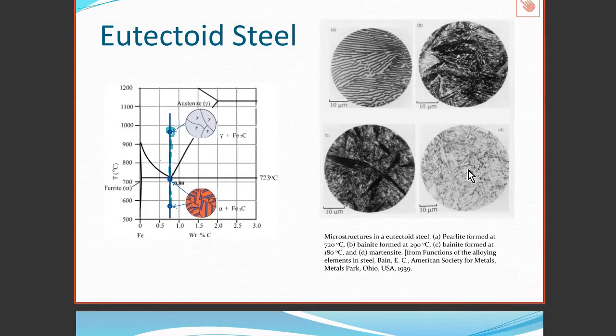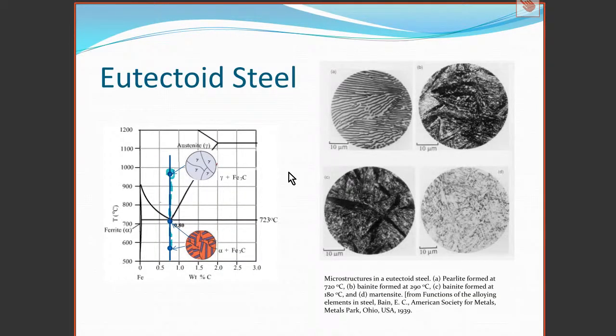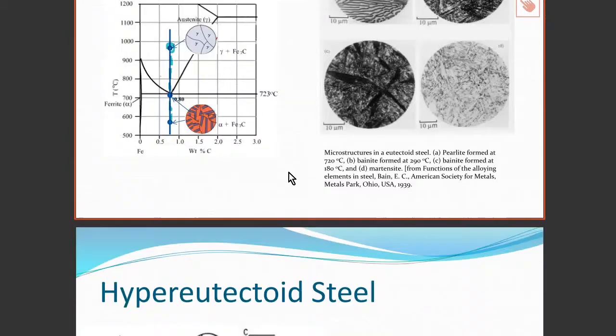Martensite is not a eutectoid product — the steel has been cooled too quickly for the carbon to separate. The carbon hasn't had a chance to form two separate phases. Upon reheating the martensite you can transform it and partially allow some of that reaction to occur — some separation of the material into carbon-rich and carbon-deficient phases.